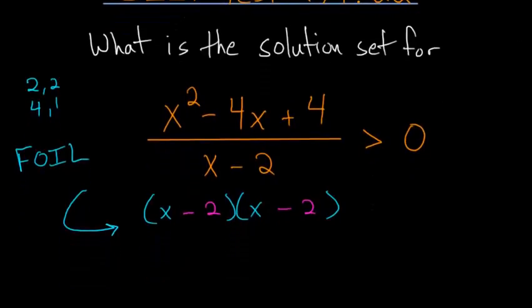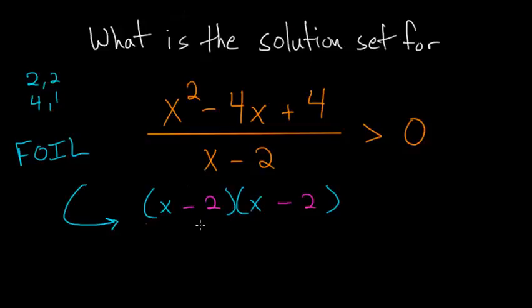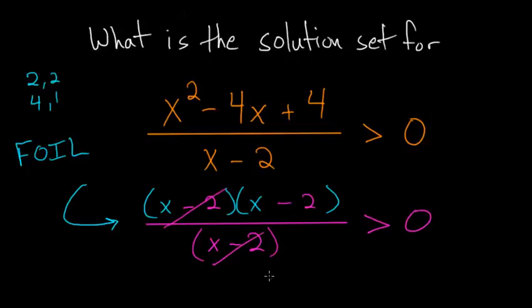So we can rewrite the entire expression now. This is all divided by x minus 2. And since we have an x minus 2 in the numerator and an x minus 2 in the denominator, they can cancel out with each other. And this is greater than 0. So what we're left with is that x minus 2 is greater than 0.